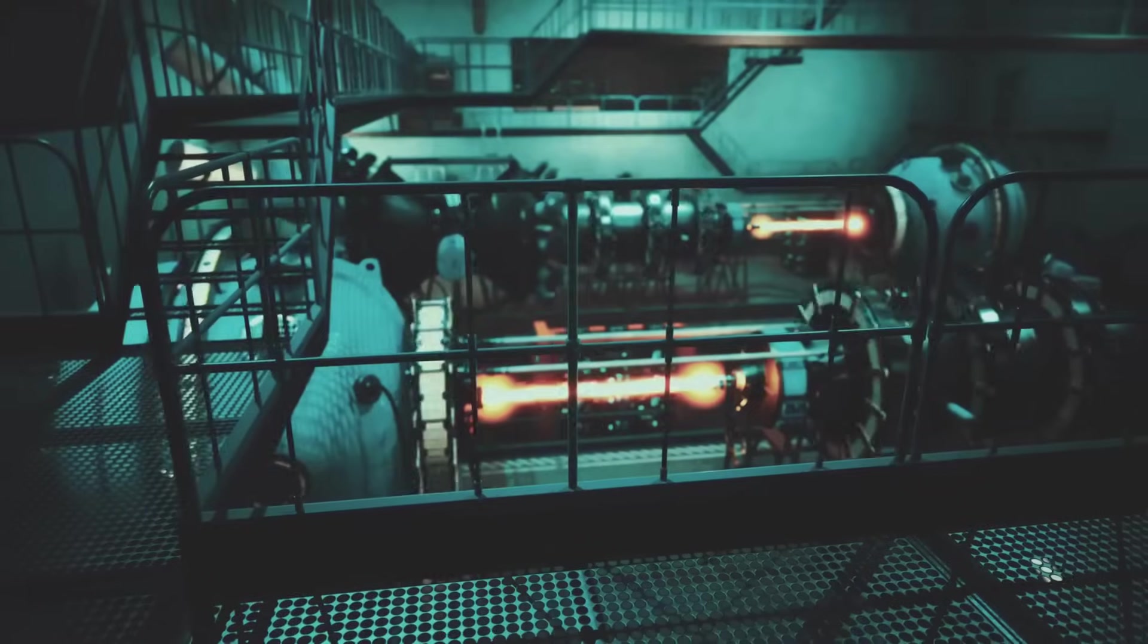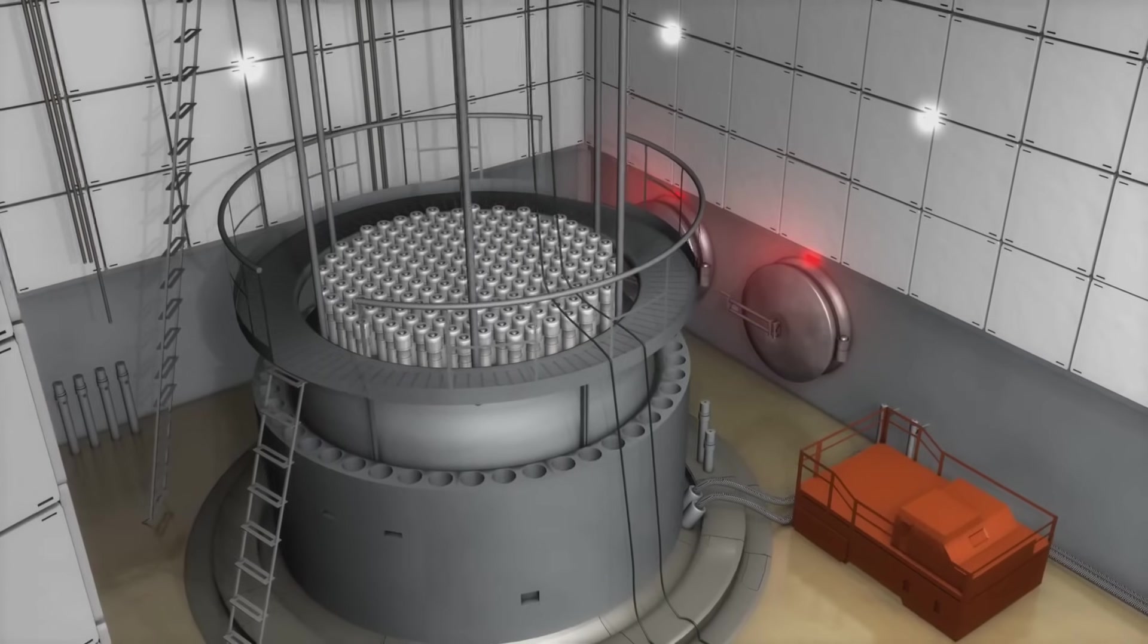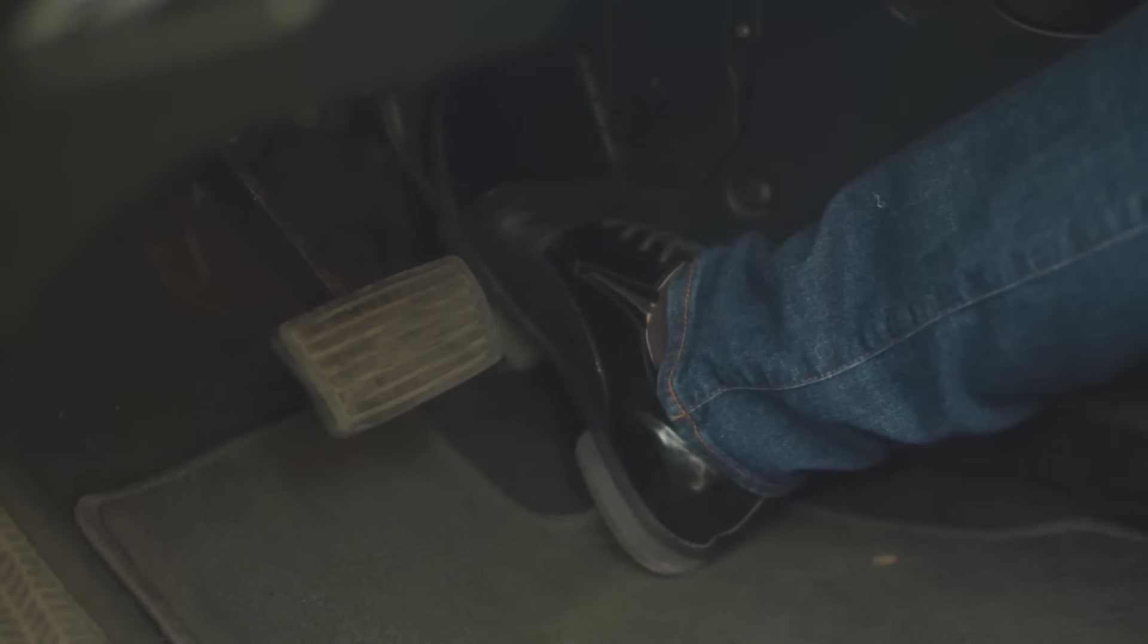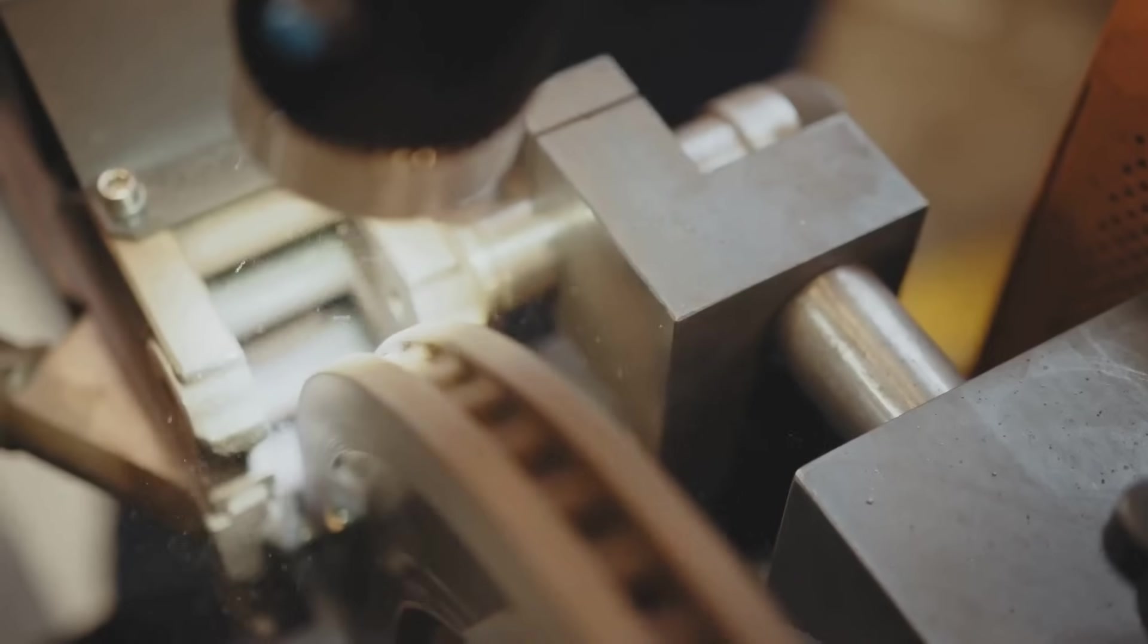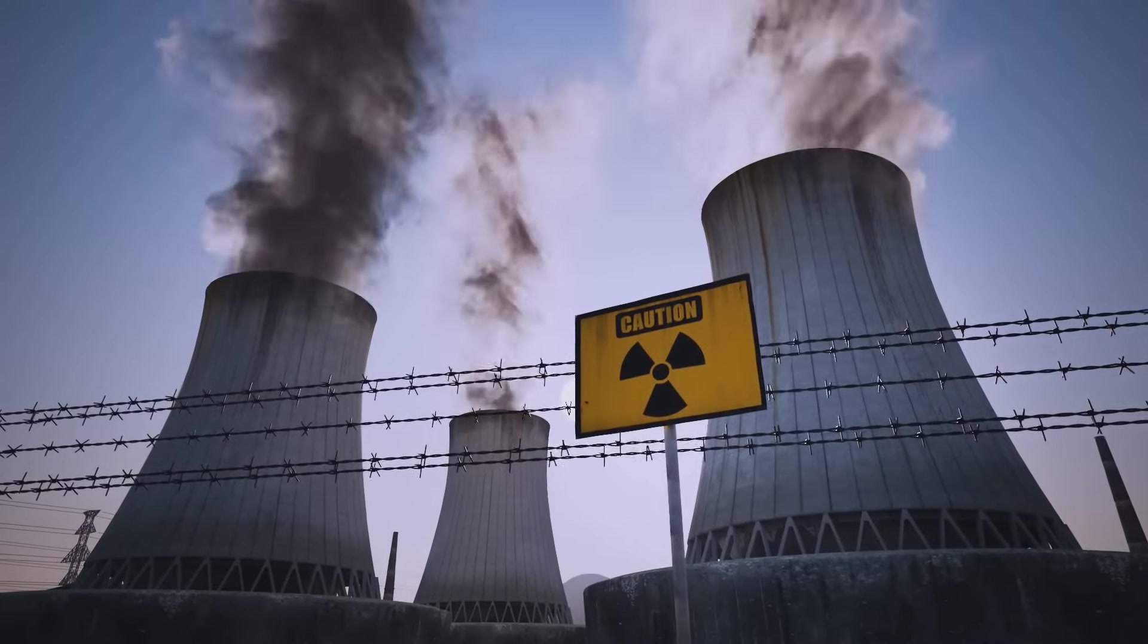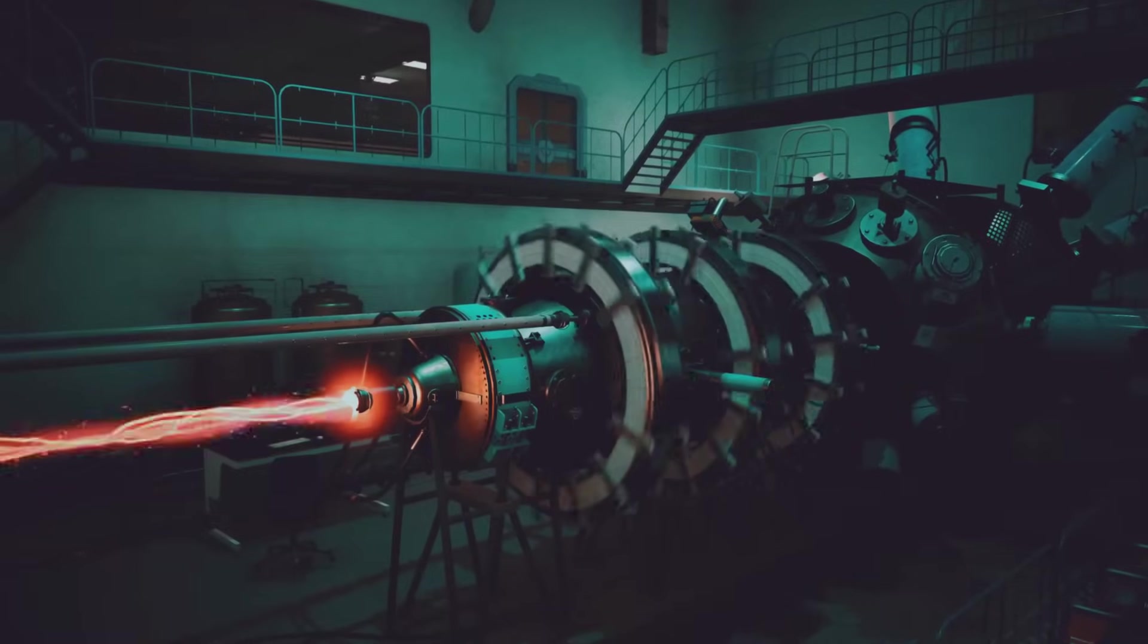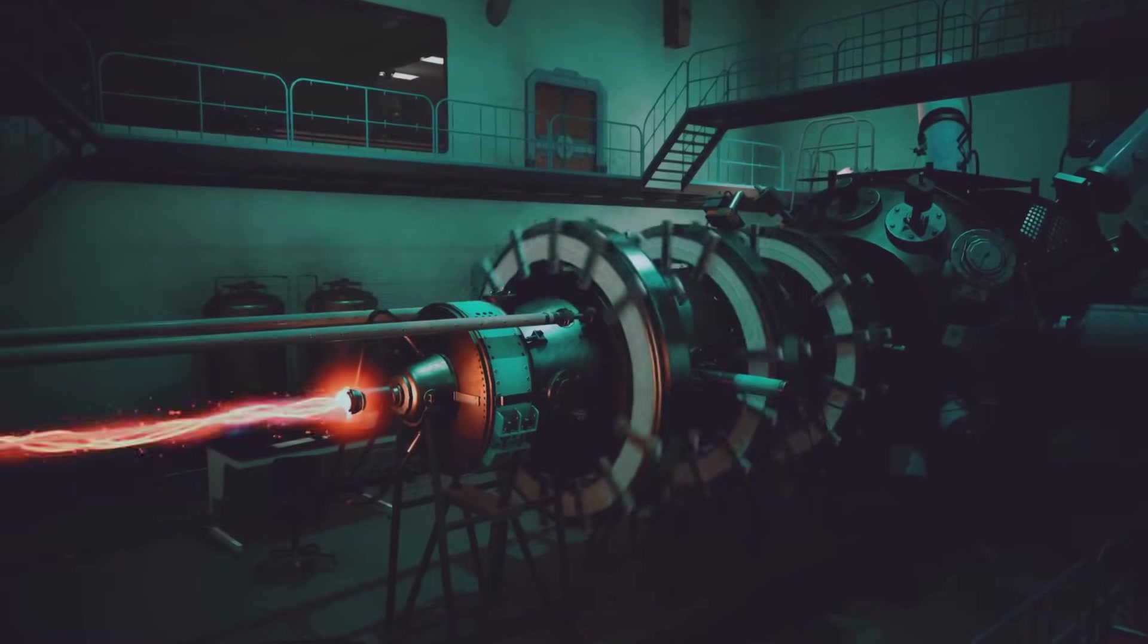In a nuclear power plant, this chain reaction is carefully controlled. Engineers use control rods to absorb extra neutrons, adjusting the reaction like a gas pedal or brake. This keeps the reaction steady, producing a constant flow of heat for electricity. The secret isn't splitting one atom, it's keeping the chain going, safely and predictably.